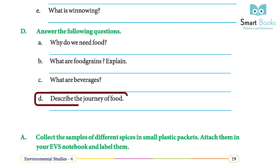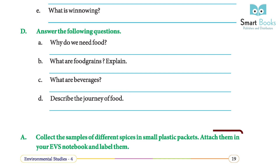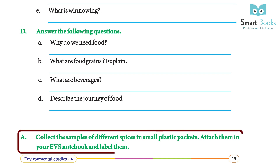Describe the journey of food. Answer: the food journey begins in the fields of the farmers. Activity: collect samples of different spices in small plastic packets, attach them in your EVS notebook, and label them.